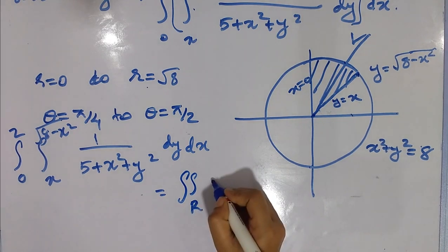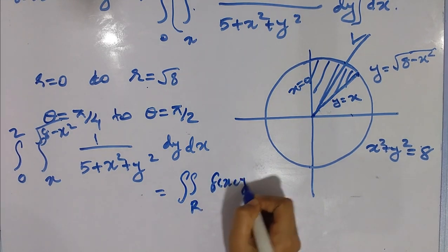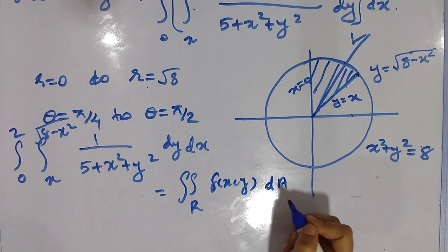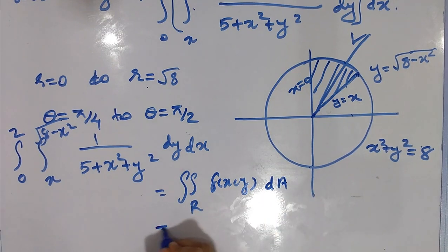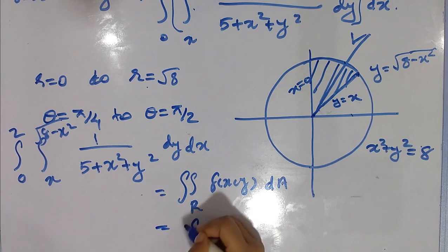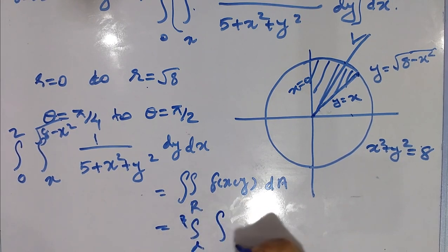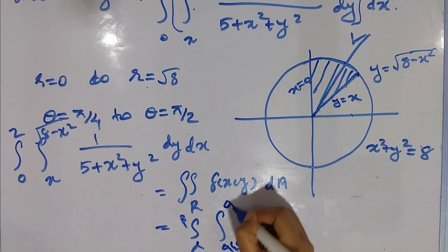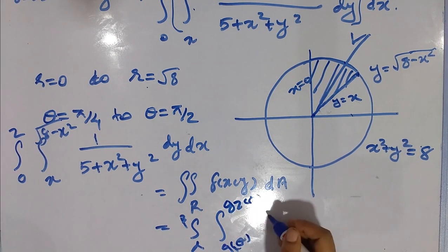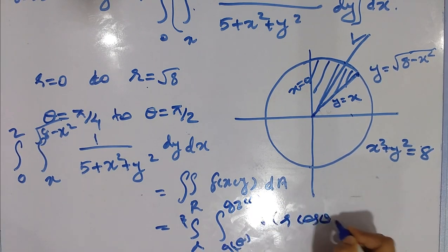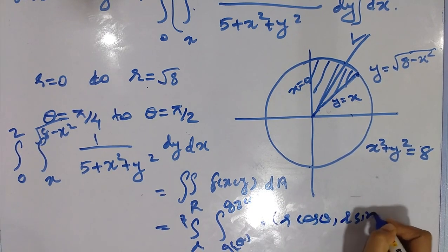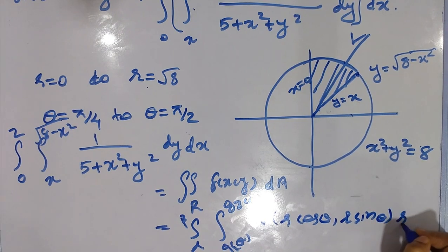The integral over R of f(x, y) dA equals the integral from α to β, integral from g₁(θ) to g₂(θ), of f(r cosθ, r sinθ) · r dr dθ. Substituting the limits, θ goes from π/4 to π/2, and r goes from 0 to √8. The function 1/(5 + x² + y²) becomes 1/(5 + r²), giving us the integrand r/(5 + r²) dr dθ.